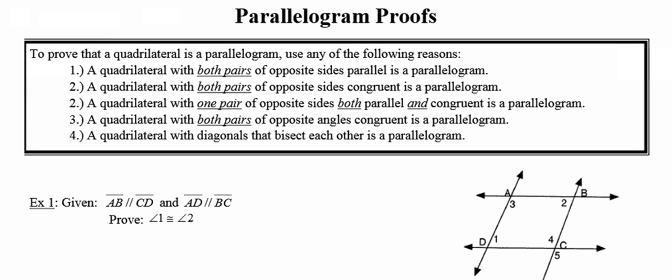You may show that both pairs of the opposite angles of your quadrilateral are congruent and that will make your quadrilateral a parallelogram. Or lastly, you can show that the diagonals of your quadrilateral bisect each other and that will make your quadrilateral a parallelogram.